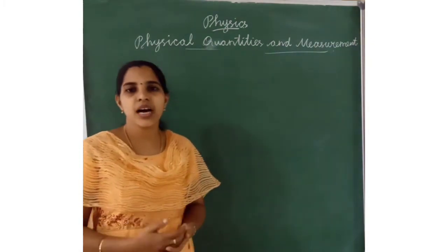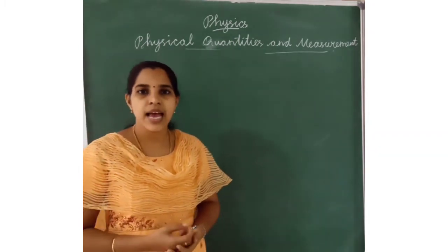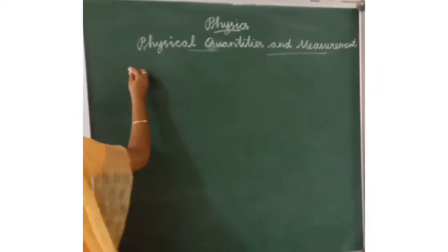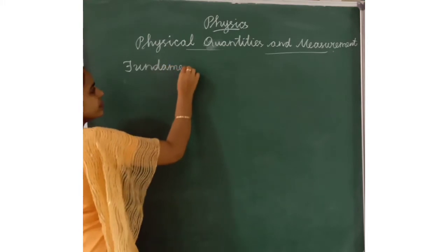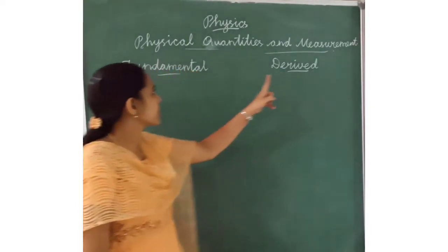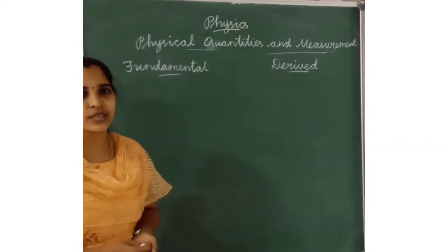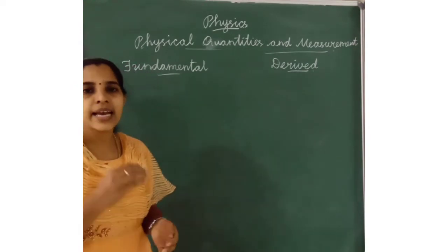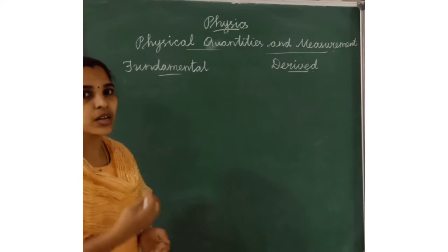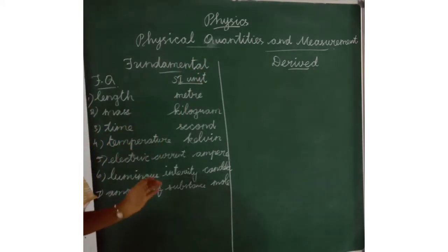Physical quantities can be divided into 2 types: fundamental quantities and derived quantities. Fundamental quantities means the physical quantities that are measured using the SI system of measurement.